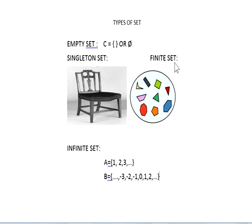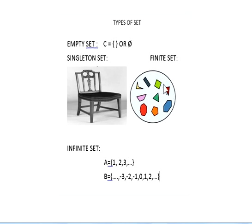The next one is the finite set. A finite set means a set that contains a countable number of elements. For example, {1, 2, 3, 4, 5, 6, 7, 8, 9} — totally 9 elements. We can count them, so this type of set is called a finite set.